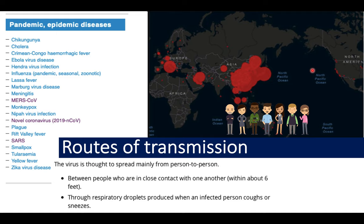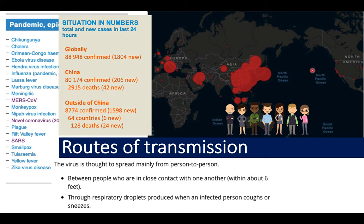Routes of transmission mainly include direct person-to-person contact, specifically between people who are in close contact within about six feet of one another, through respiratory droplets. As of the 5th of March 2020, the WHO announced 91,000 cases with 2,950 deaths, and 64 countries outside of China have been affected with 128 deaths.